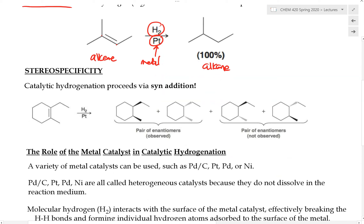Hydrogenation reactions have been found to be somewhat stereospecific. We will be able to produce some products and not others — we will not be producing a mixture of various diastereomers. In the course of a hydrogenation reaction, we would only observe one pair of enantiomers, but we do not observe the other diastereomers.